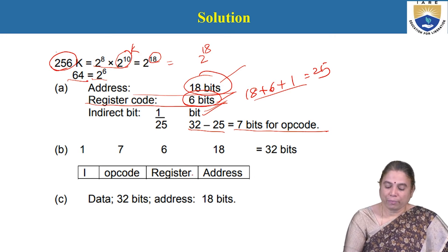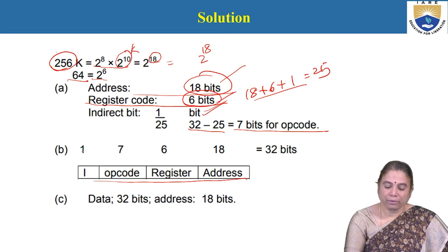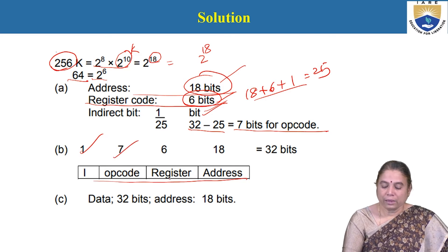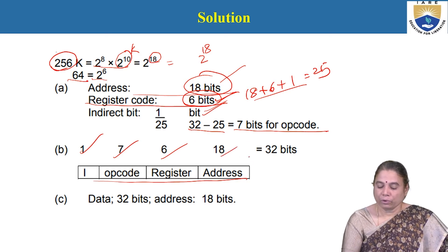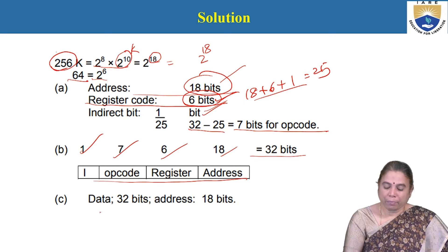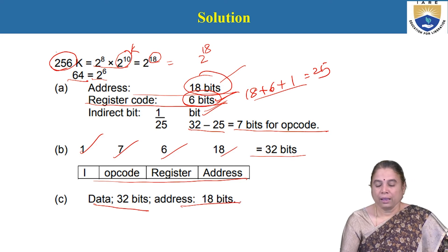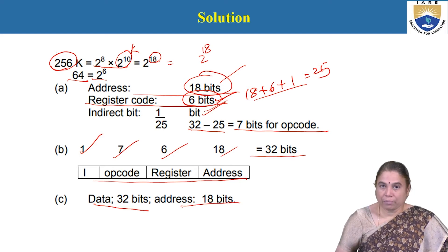The instruction format contains four parts: the indirect/direct bit (1 bit), opcode (7 bits), register code (6 bits), and address space (18 bits), totaling 32 bits. The data part is 32 bits and the address part is 18 bits. This is the solution for the first problem.